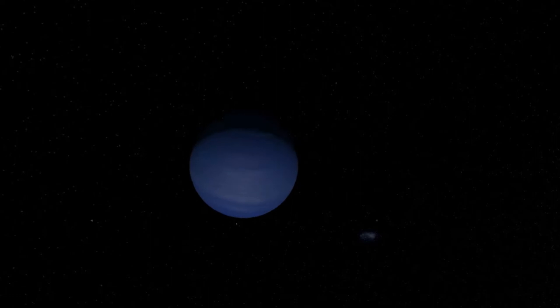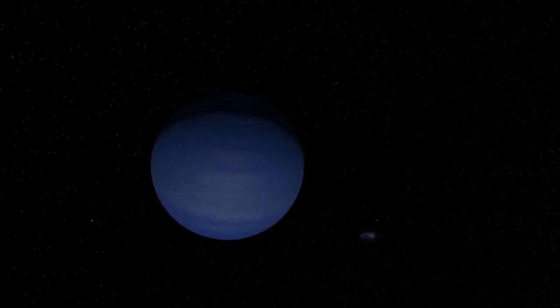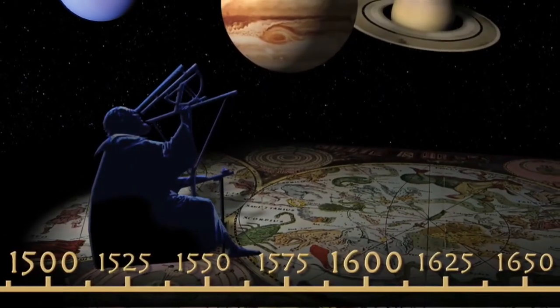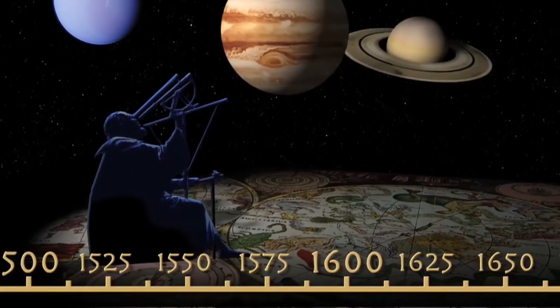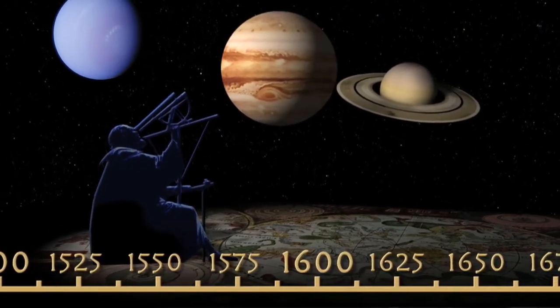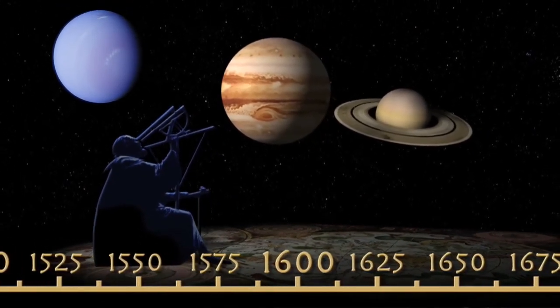Neptune is the first planet located through mathematical predictions rather than through regular observations of the sky. Galileo recorded it as a fixed star during observations with a small telescope in 1612 and 1613.